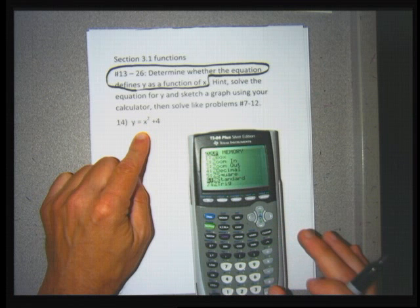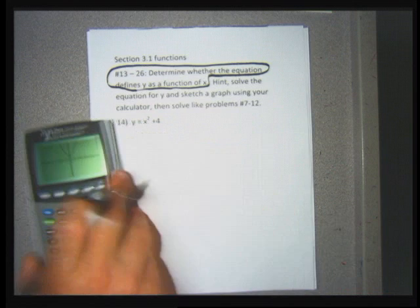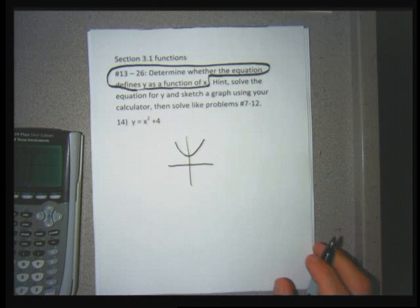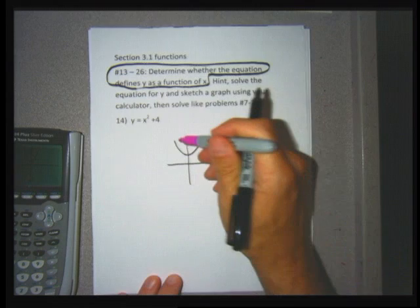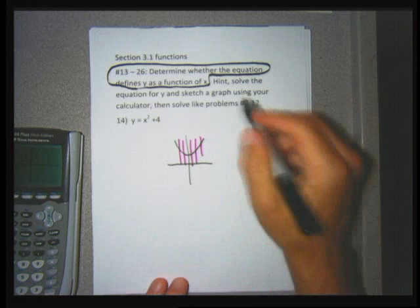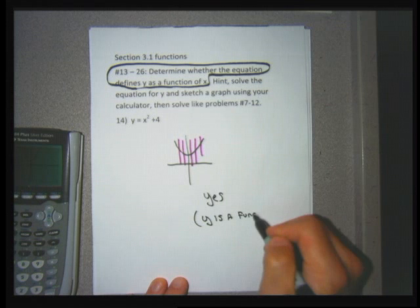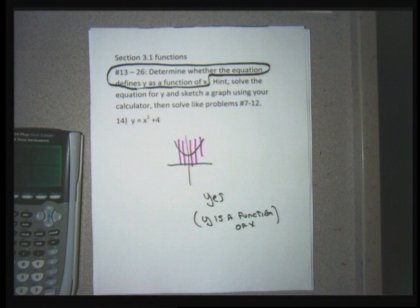Problem 14 gives a nice parabola. The question is: can I draw a vertical line to touch the graph in more than one place? The answer is no, so I write yes — y is defined as a function of x. My answer for 14 is yes, meaning y is a function of x, meaning there aren't two points with the same x.